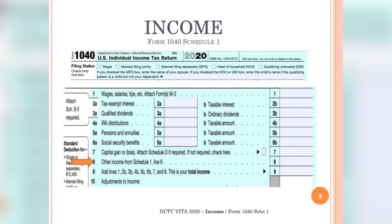I've already addressed wages, interest, dividends, retirement income, Social Security, and capital gains in the previous segment. So that takes us down to Line 8, other income from Schedule 1. Before going to Schedule 1, let's take a peek back at the Form 13614C to identify the types of income that could be reflected on Schedule 1.